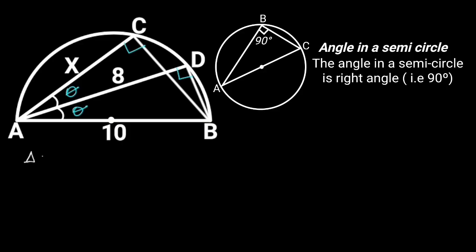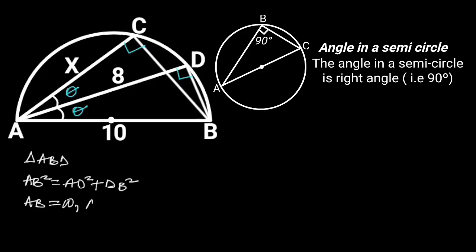Next, let's focus on triangle ABD. Since triangle ABD is a right triangle, from the Pythagorean theorem, AB squared is equal to AD squared plus DB squared. AB is equal to 10 and AD is equal to 8. Substituting these values gives us: 10 squared is equal to 8 squared plus DB squared.